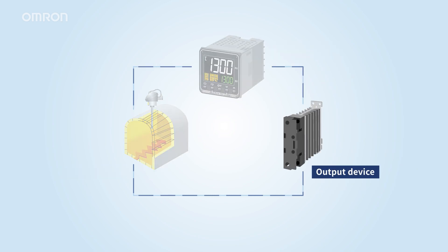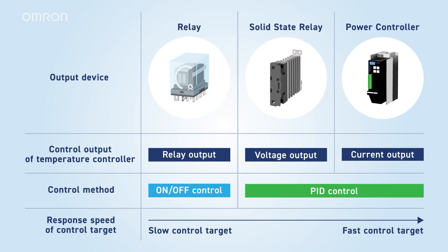Next, let's introduce the types of output devices. The main output devices include relays, solid-state relays, and power controllers. These devices receive control output from the temperature controller to turn the heater's power on and off. Output devices are primarily selected based on the response speed and control method of the target being controlled.